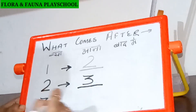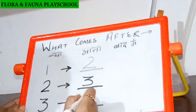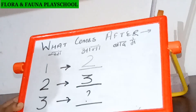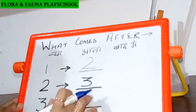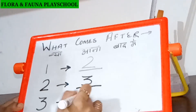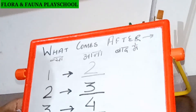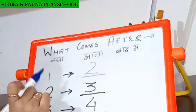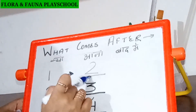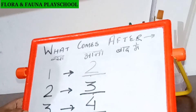Three. What comes after three? Tell me. Three ke baad four aata hai. Very good. So, four. One, two, three. So that means one ke baad two aata hai. Two ke baad three aata hai. Three ke baad four aata hai.